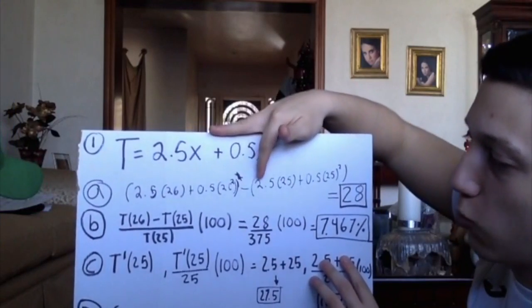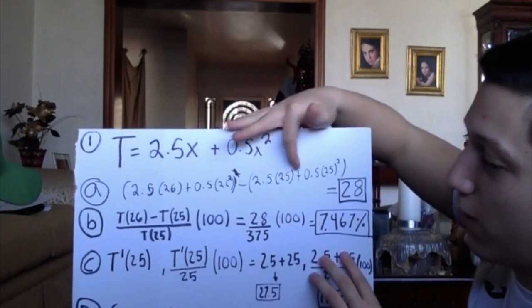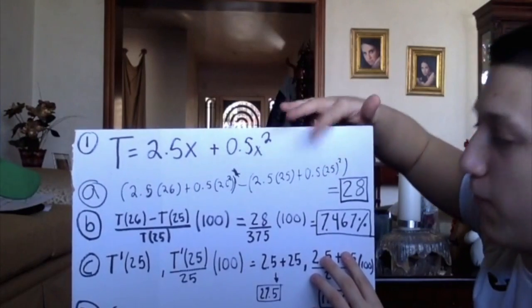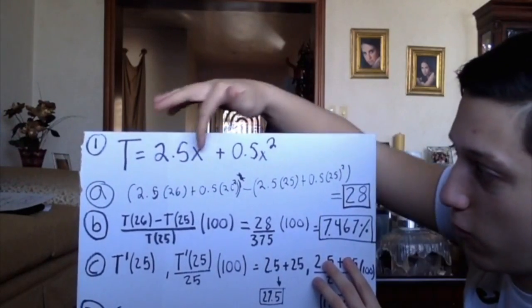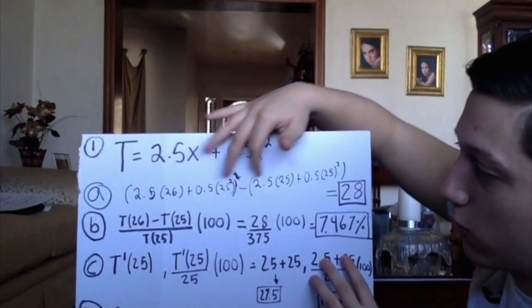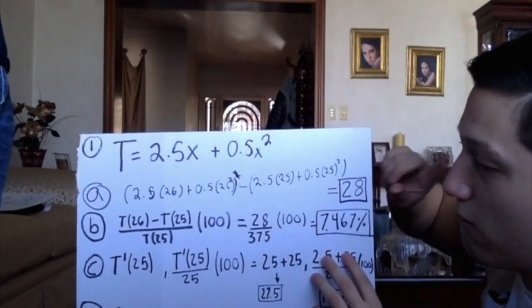So it will be 2.5 times 25 plus 0.5 times 25 squared. And when we subtract both of these, we get that the change is 28.